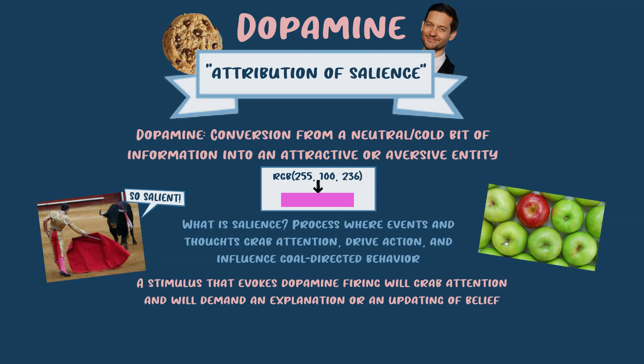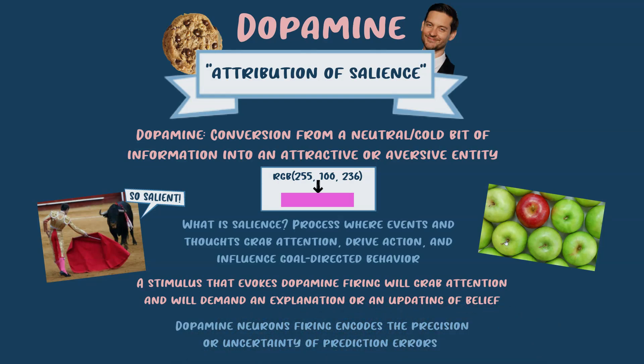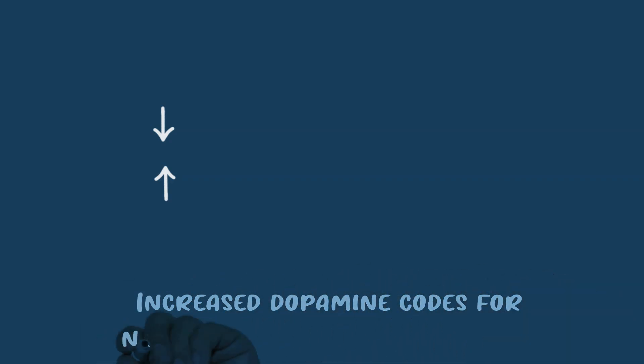Now I want to connect dopamine to the predictive processing model. What dopamine literally encodes is the precision of the uncertainty of prediction errors. Prediction errors are a mismatch between our top-down and bottom-up models — they occur when there's a mismatch between our expectation (our top-down models) and the actual inputs (our bottom-up input). Dopamine codes for a narrowed confidence interval for this mismatch.